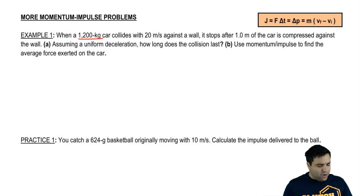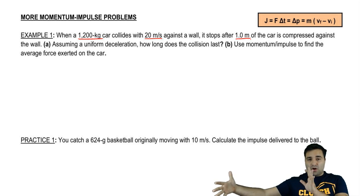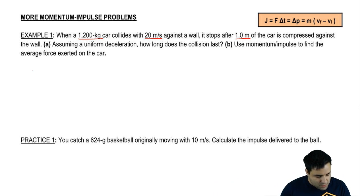We have a 1,200 kilogram car that collides with 20 meters per second against the wall. And then it stops after 1 meter of the car being compressed against the wall. Sort of the front part of the car gets all squished up, right? So let's draw this real quick. 1,200 kilogram car, let's put some wheels, is moving with 20 meters per second when it hits a wall.